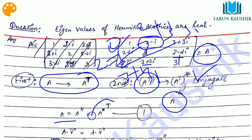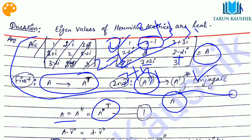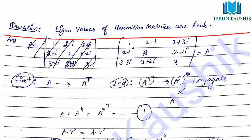A Hermitian is just the transpose of the conjugate, or equivalently the conjugate of the transpose. So the property of the Hermitian matrix is: A equals A^H, or equivalently A equals A^(*T), where star means the conjugate.